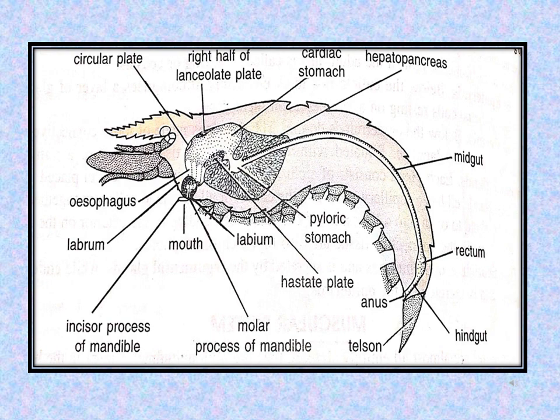Coming to the buccal cavity, mouth leads into the buccal cavity. It is short and vertical. It shows thick and folded cuticle. The molar processes of the mandibles project into the buccal cavity. Please remember the structure of the mandibles had two processes: incisor process and molar process. The buccal cavity opens into the esophagus.